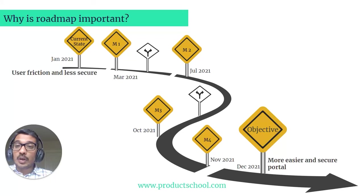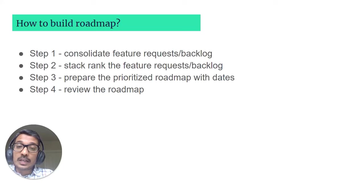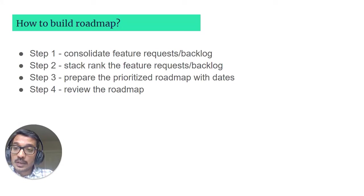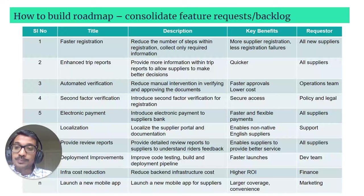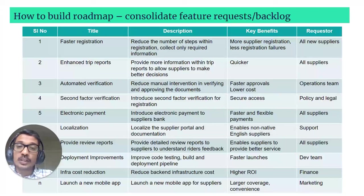Now that we know why a roadmap is important, let's see how to build one. I see building a roadmap as a four-step process. First, consolidate all feature requests or your product backlog. Then stack rank all of these feature requests. Then prepare a prioritized roadmap with dates, and then review the plan with stakeholders before starting execution. Step one is to consolidate all feature requests — this is knowing the current situation, what has to be done, where the gaps are, and what improvements need to be made.